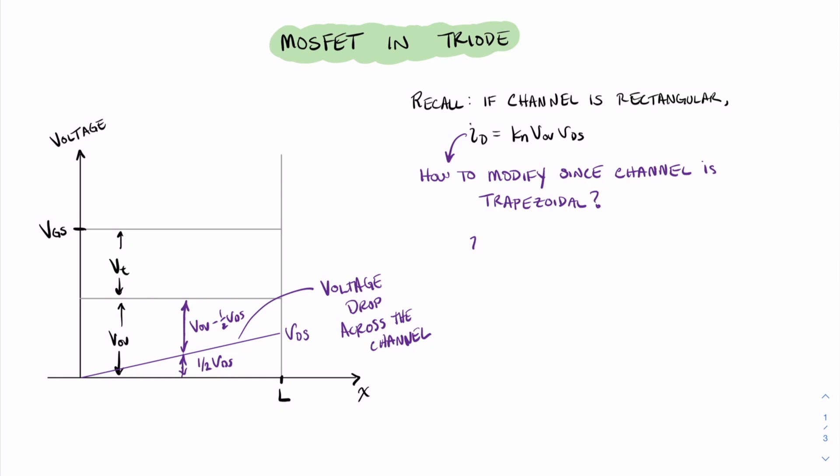So now the drain current is given as ID equals KN quantity, the overvoltage minus one-half VDS times VDS. And this equation is the equation for current in a mode that we call triode mode.